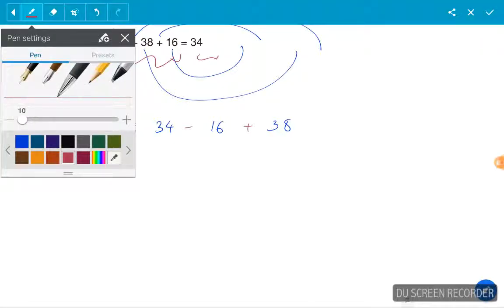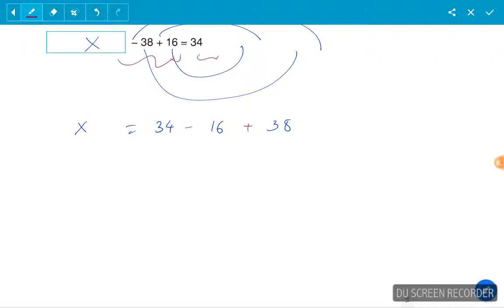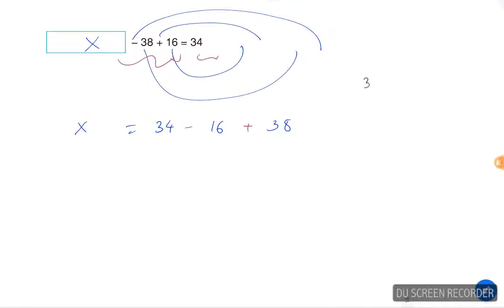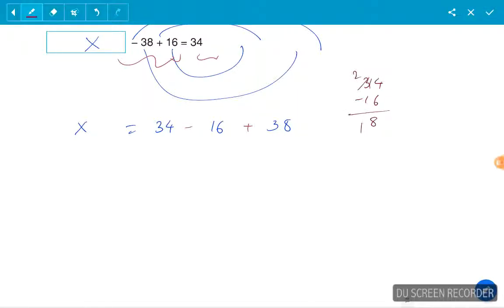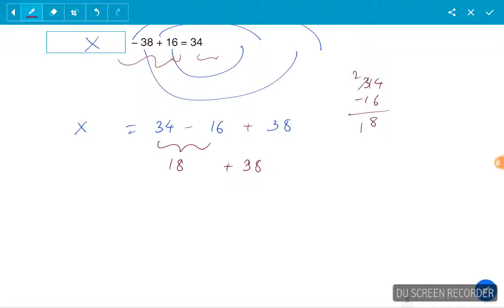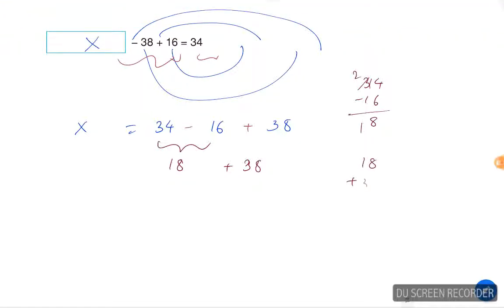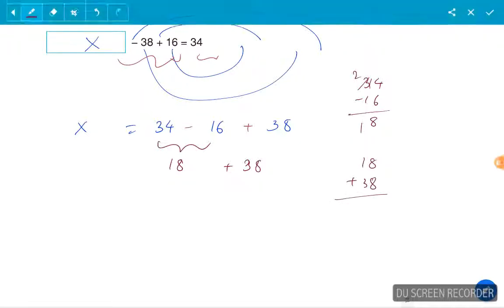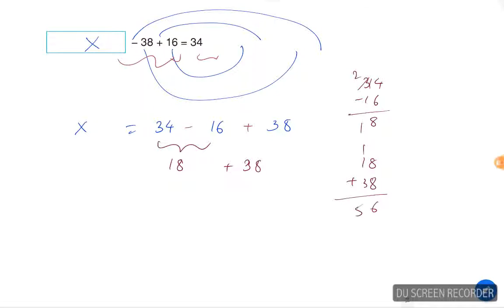Now the equation is easier to solve. So we do 34 less 16 and we get 18. This part will give us 18 add 38, so 18 plus 38, 8 and 8 is 16, should give us the value of x as 56.